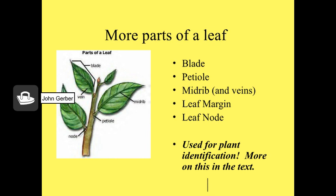You'll need to know these parts of the leaf for the exam: the blade, the petiole which connects the leaf to the stem, the midrib which has the veins, leaf margins — which are often used to help identify the plant, sometimes serrated and sometimes roundish — and the leaf node, which is where the petiole is connected to the stem.